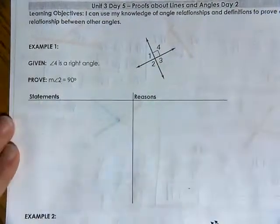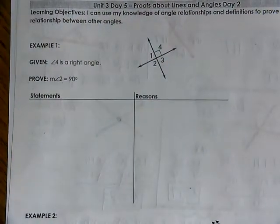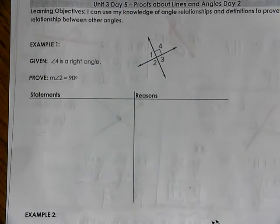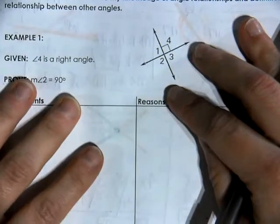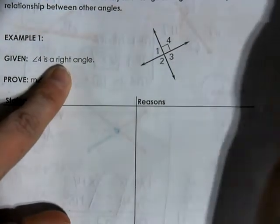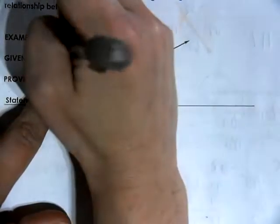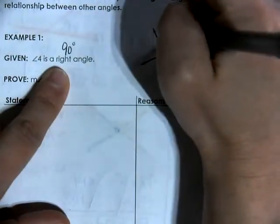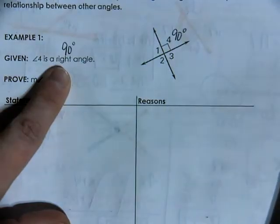Looking at the very first proof, what we have is we are given angle four is a right angle, and we want to prove that the measure of angle two is 90 degrees. So before you even get started, analyze this problem. What do you notice about angle four being a right angle? A right angle is an angle whose measure is 90 degrees, so I know that this angle is going to be 90 degrees.